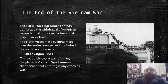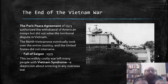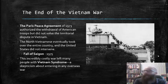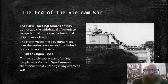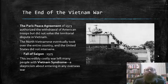As the Americans began to withdraw from Vietnam, the North Vietnamese eventually took over the entire country, making Vietnam not only united, but united under a communist government. The United States did not intervene in this process. This process was completed in 1975 with the fall of Saigon.